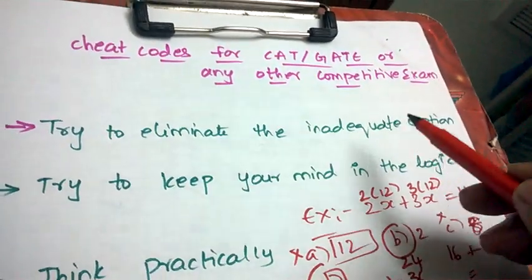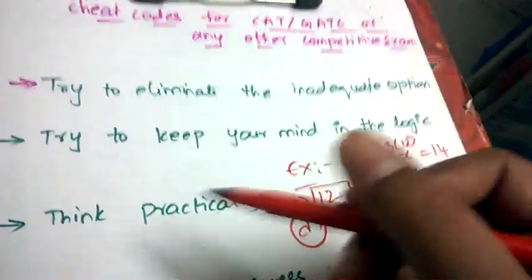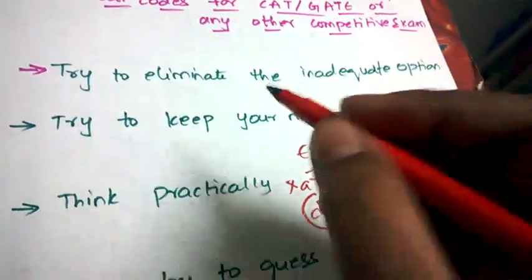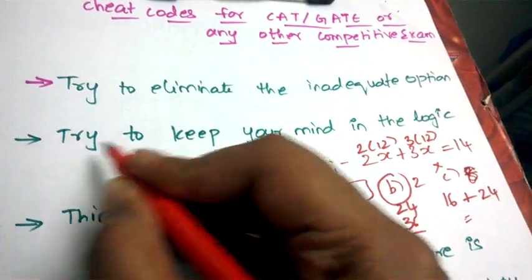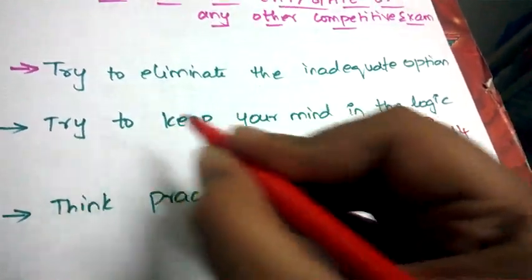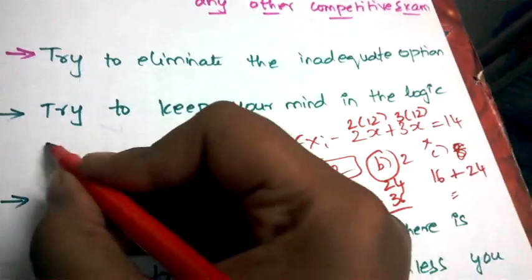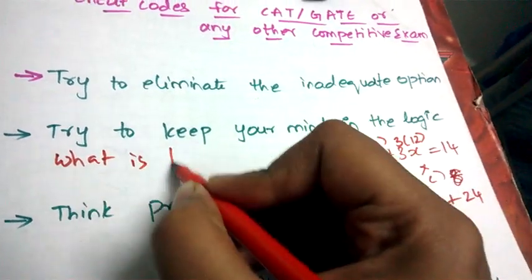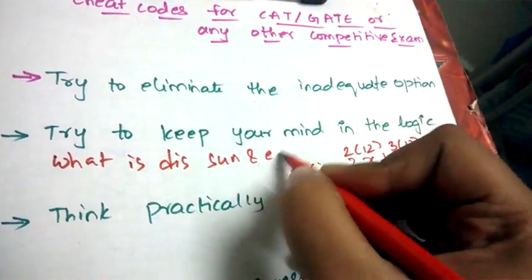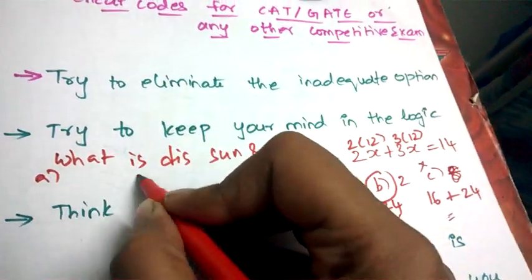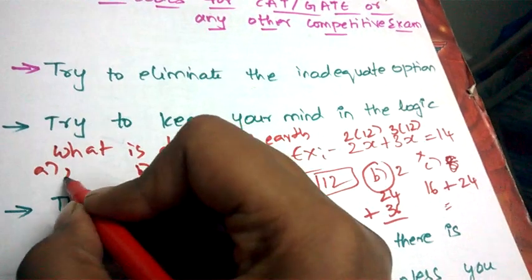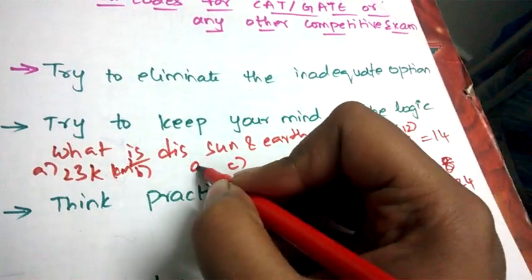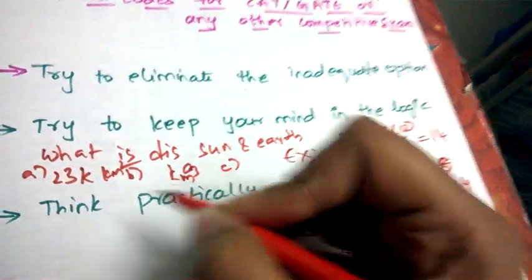Next tip is just try to keep your mind in the logic. Example: I am taking a question - what is the distance between sun and earth? And the options are given like 23,000 kilometers square and something kilometers cube and some other value.